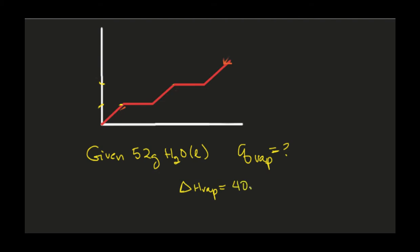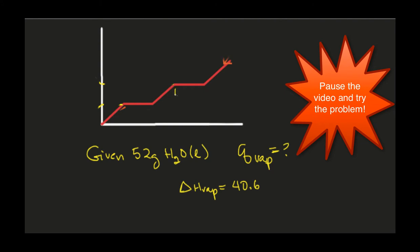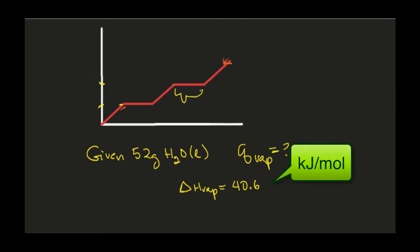The first problem I'm going to give you: I'm going to tell you we're looking at water and we have 52 grams of water in liquid form, and I want to know the Q of vaporization. If you want the constant, it's right here: 40.67 kilojoules per mole. So what we're calculating is the enthalpy for this block right here.